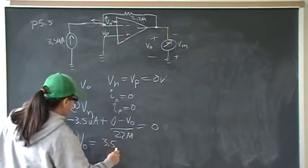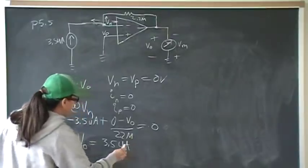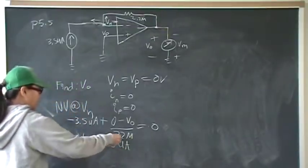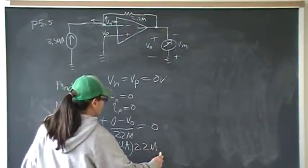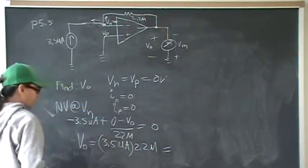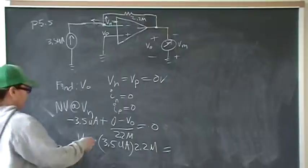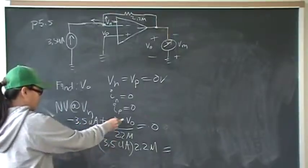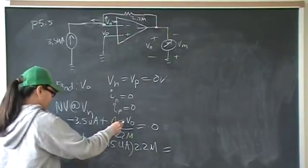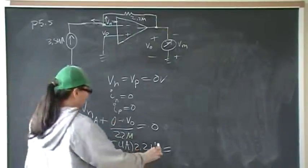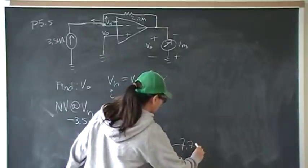It becomes positive 3.5 microamps, and then we multiply by 2.2 megaohms. This was negative, so we have to multiply by a negative. We'll get negative 7.7 volts.